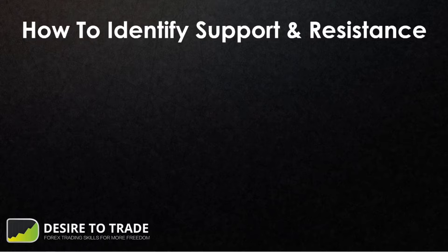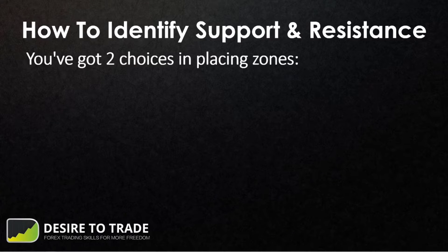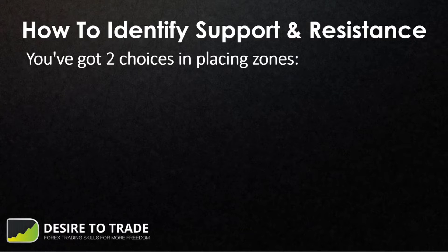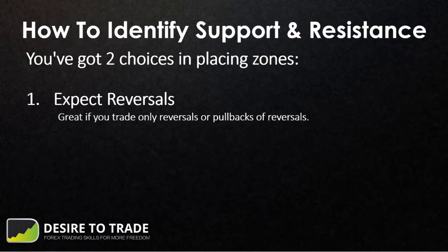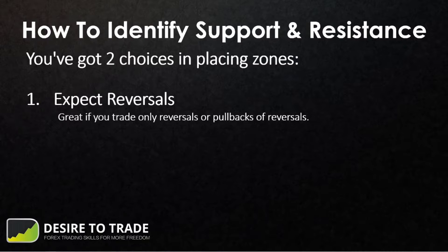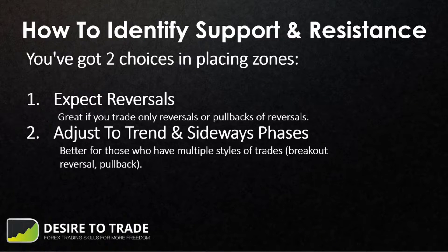Let's talk about how to identify support and resistance zones. You have two choices when placing zones. The first is that you expect reversals — this is great if you trade only reversals or pullbacks. You look at all the zones and put them all on your chart, no matter where they are in the market.